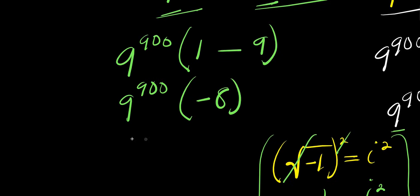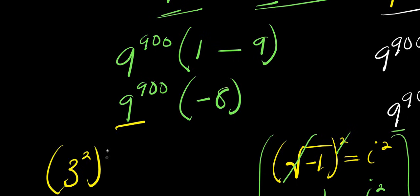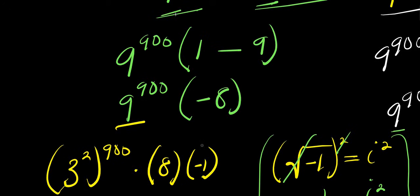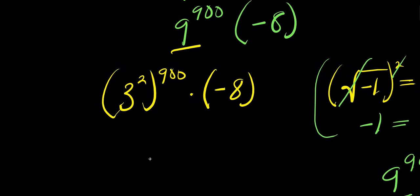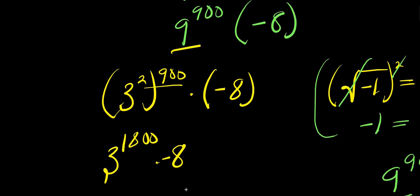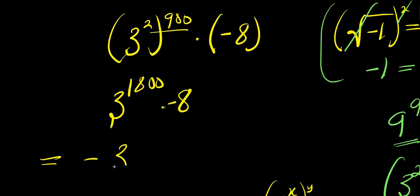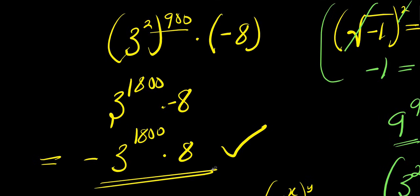You can leave it as 9^900 times negative 8, or break it further: 3^2 raised to the power of 900, times 8 times negative 1. Multiplying out gives 3^1800 times negative 8. We can simply leave our final answer as negative 8 times 3^1800.